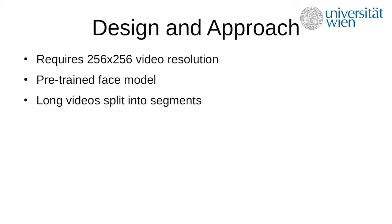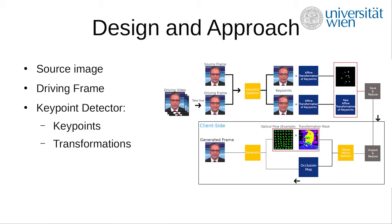At the beginning, we took the first frame of the chosen video, referred to as the source image. The key point detector then detected the key points and fine transformations of the source image and the currently processed frame of the driving video. These defined transformations tell us the positioning of each key point and define what areas are affected by each. Relative motion was then applied, calculating the transformation between the first frame and the currently processed frame, representing the warping of the source image.